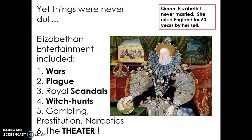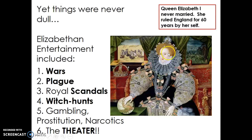Queen Elizabeth I never married. She ruled England for 60 years by herself. She's known as the Virgin Queen and was a really unique leader in that she was a female monarch for so long. It was very popular to have a cinched waist, so corsets were worn and pulled really tight. To be very pale was also considered really attractive, because it showed that you were not a common laborer — you didn't have to go into the sun to make your living. Having a high forehead was also attractive, so women would actually shave and pluck their hair to have an extra high forehead.